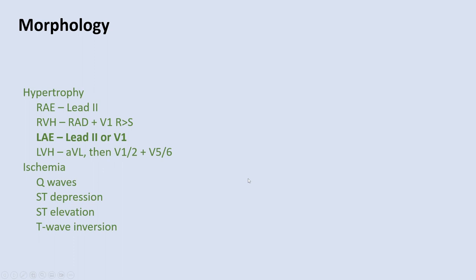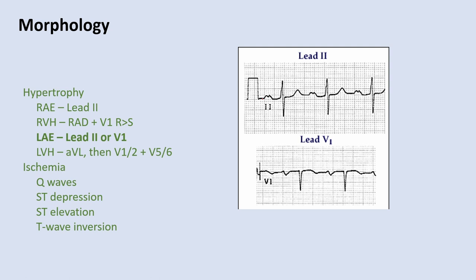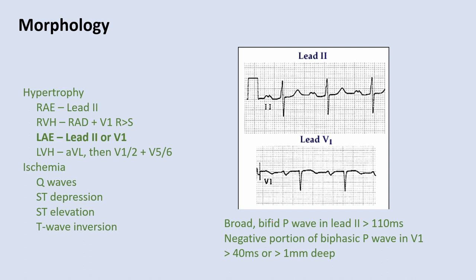For left atrial enlargement, look in either lead 2 or lead V1, or both. In lead 2, look for an M-shaped bifid P wave — wide and notched rather than the tall pointed P wave of right atrial enlargement. In lead V1, you normally have a biphasic P wave; if the negative deflection becomes more negative than positive, or the negative part is longer than the positive part, that suggests left atrial enlargement. You're looking for a broad bifid P wave in lead 2, or a prolonged and especially deep negative portion of the biphasic P wave in V1.